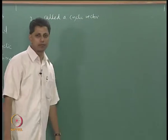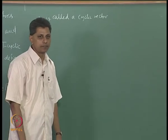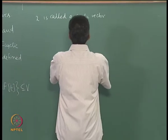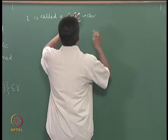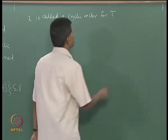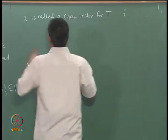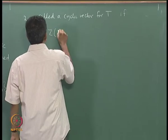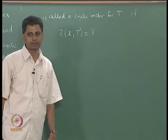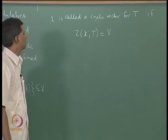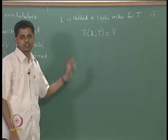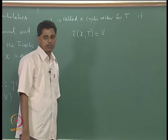By the way, the reason it is called cyclic will be clear when we get a basis for this subspace. For now, x is called a cyclic vector for T if this subspace Z(x,T) equals the whole of V.